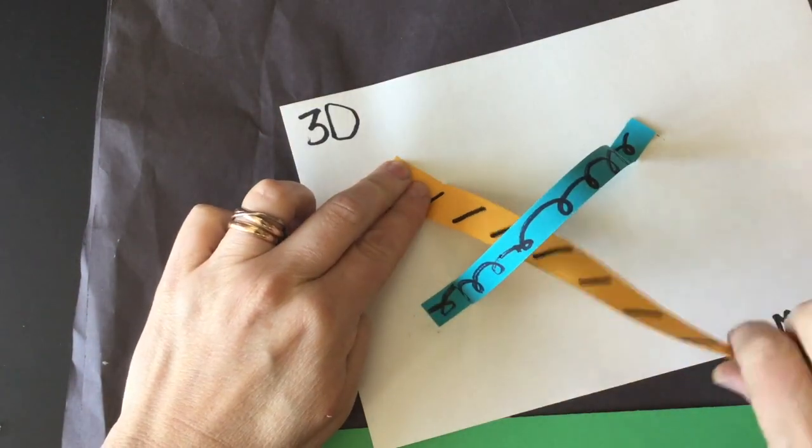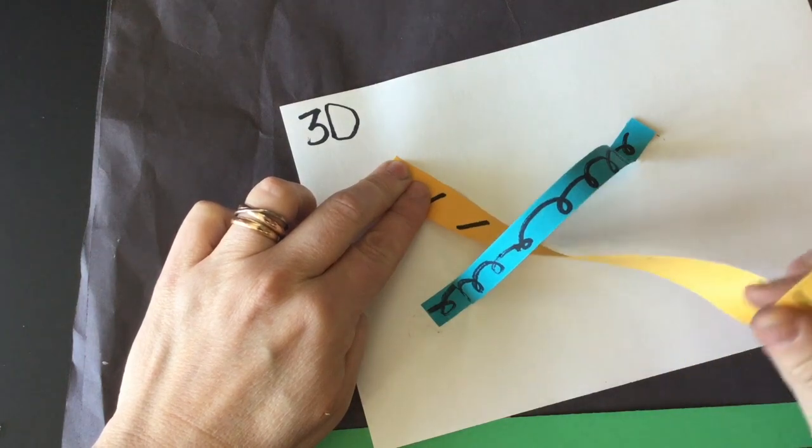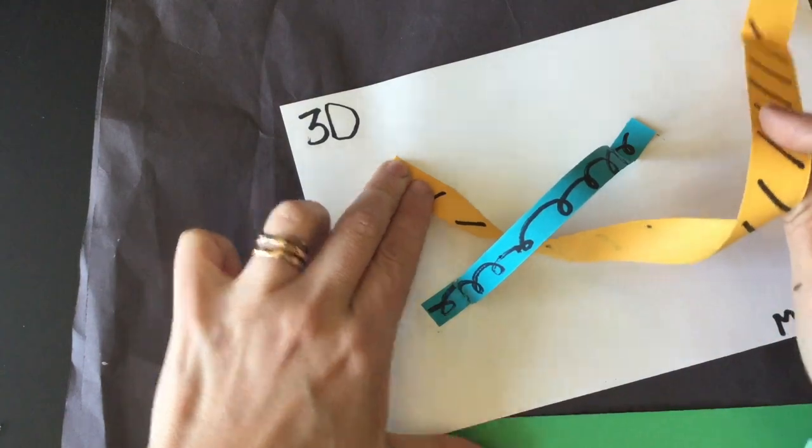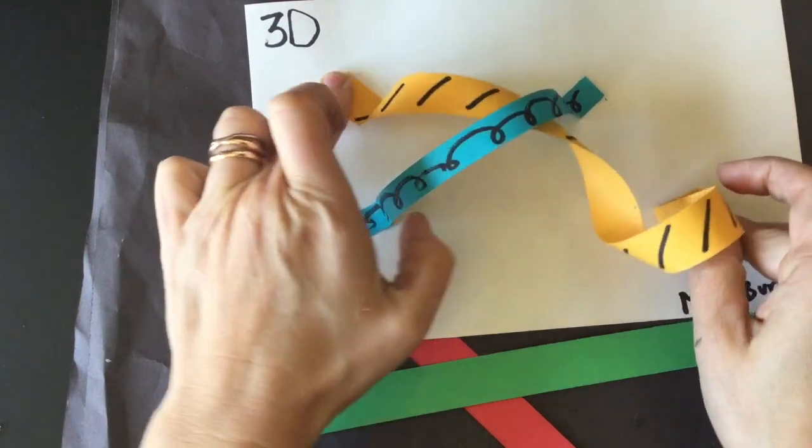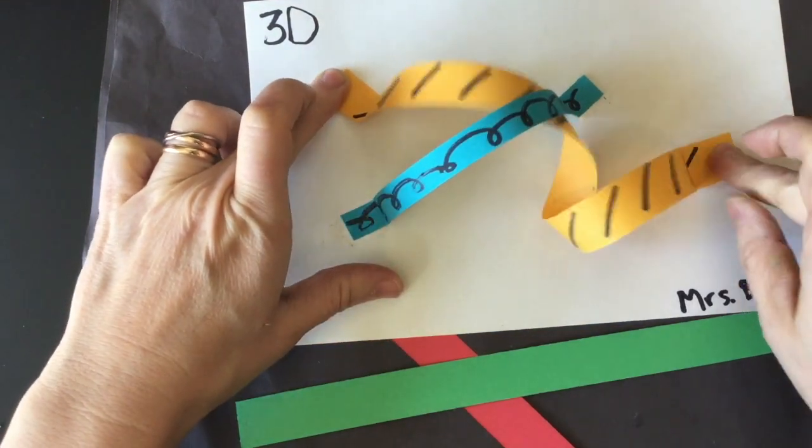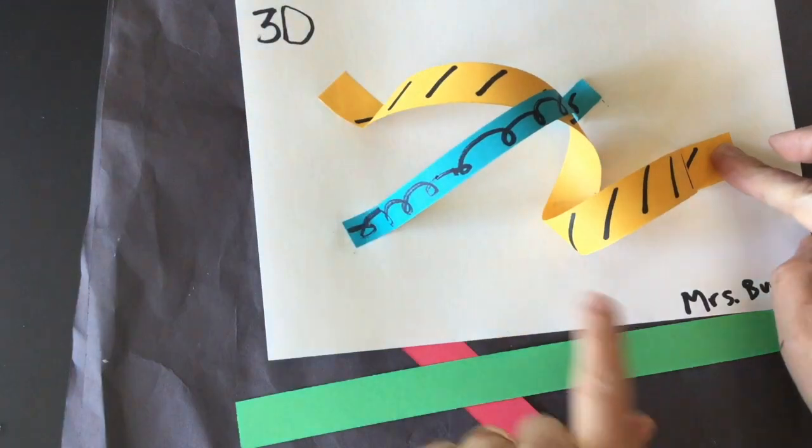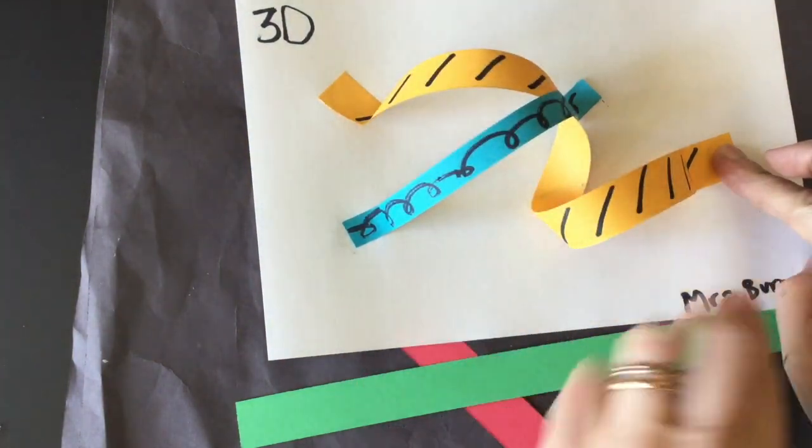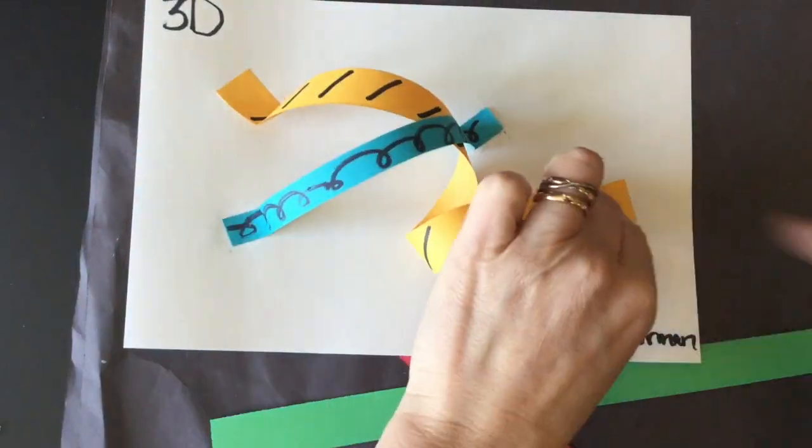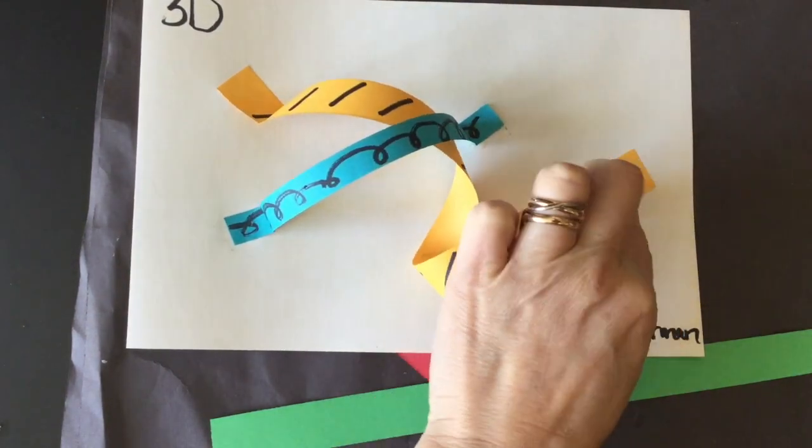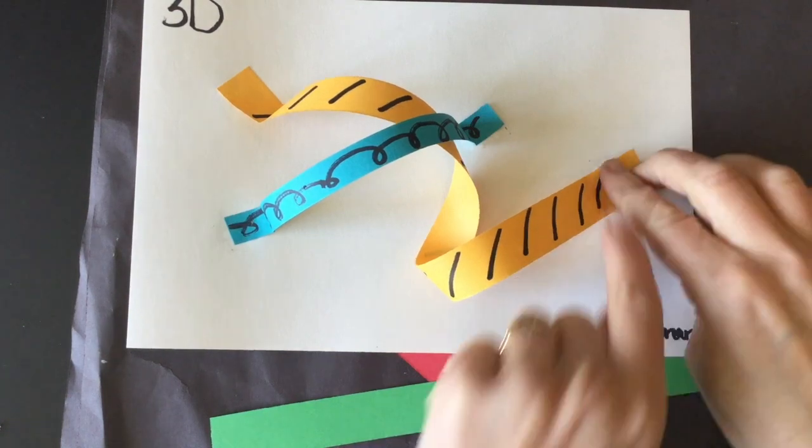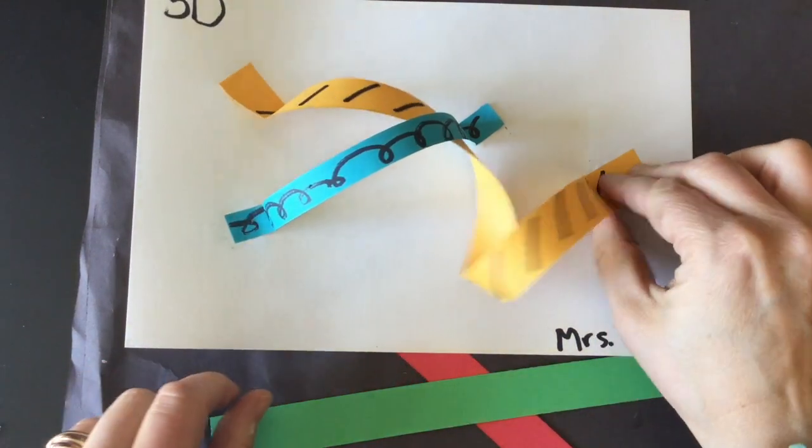And now I'm going to twist my paper. Like that. Look at that spirally line. And I'm gonna glue the other one here. Tap and glue. 1, 2, 3, 4, 5, 6, 7, 8, 9, 10, 11, 12.